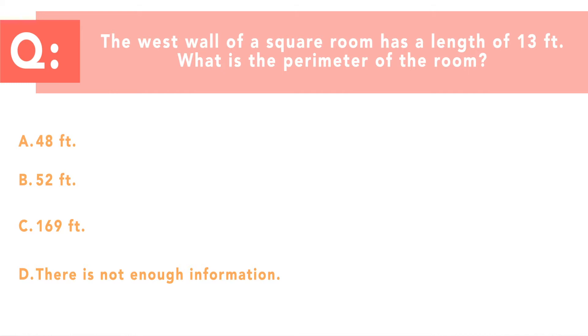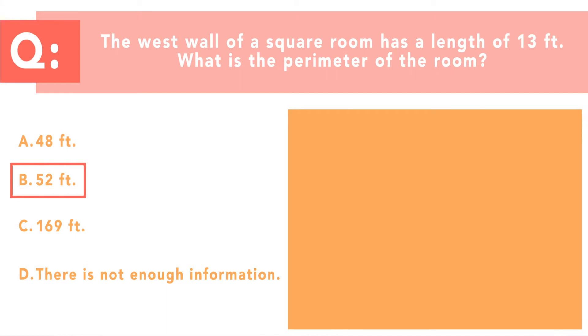The correct answer is 52 feet. A square has 4 sides of equal length. So the perimeter is the total distance around an object. So to find the perimeter of a square, just follow the formula, p equals 4s, or p is the perimeter and s is the length of a side. In this case, p equals 4 times 13, which is 52 feet. Now let's look at the last question.